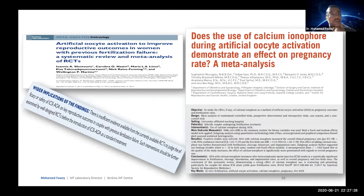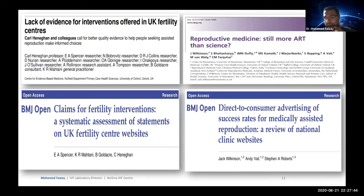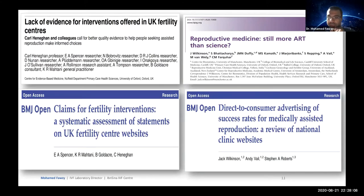Two meta-analyses are available with contradictory conclusions regarding artificial oocyte activation for improving embryological and clinical outcomes in cycles with fertilization failure. However, those analyses include retrospective studies, historical comparisons, or relatively underpowered studies. Most studies have only examined calcimycin AOA, although strontium chloride has shown potential in other reports. No comparative randomized controlled trial has evaluated the relative effectiveness of calcimycin and strontium chloride compared with ICSI alone, yet the procedure has continued to be promoted.